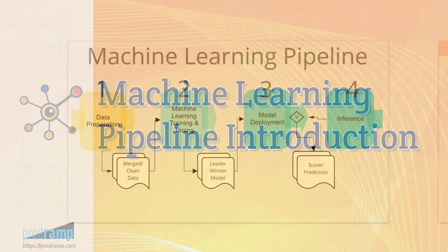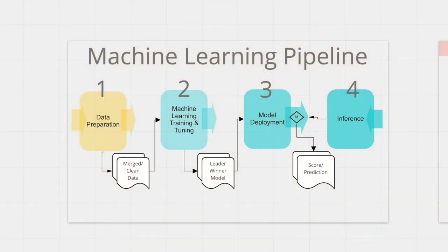A pipeline consists of several stages of processing levels with lots of inputs and outputs. Like any other pipeline, the machine learning pipeline also consists of several levels. To be very specific, there are 4 key levels in any machine learning pipeline.